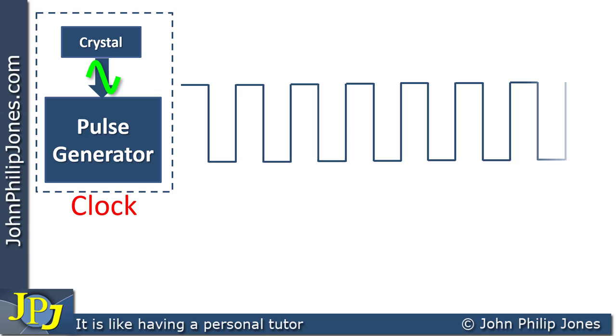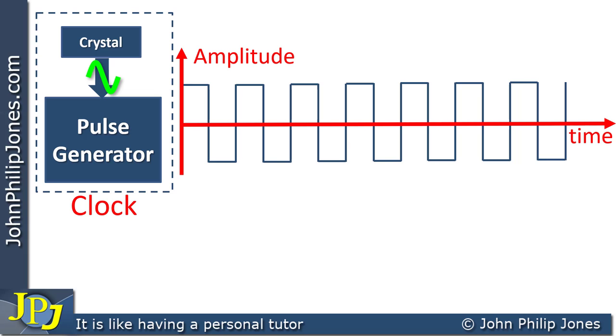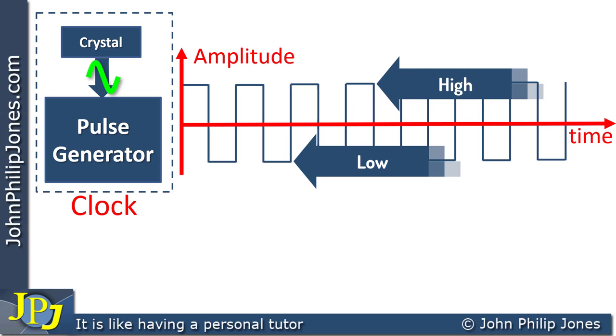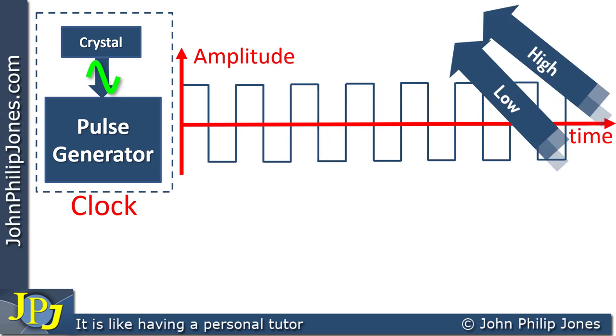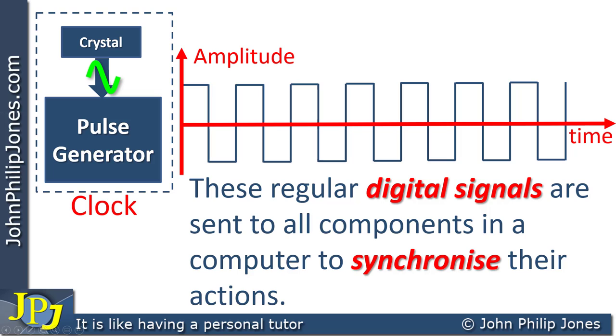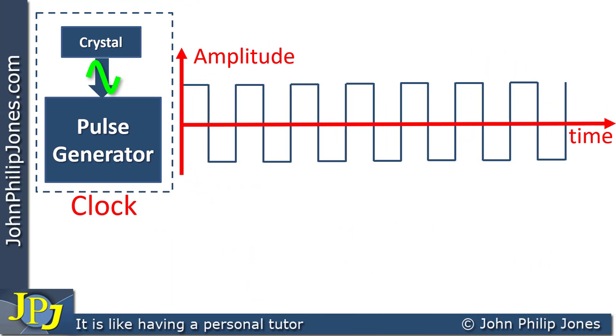Consider this waveform against time and also consider its amplitude. And what you can see is we don't have a continually changing amplitude. We have an amplitude that has two levels, a low level and a high level. In other words, we have a digital waveform. These regular digital signals are sent to all components in a computer to synchronize their actions. Let's just consider a characteristic of this square wave, this digital signal.